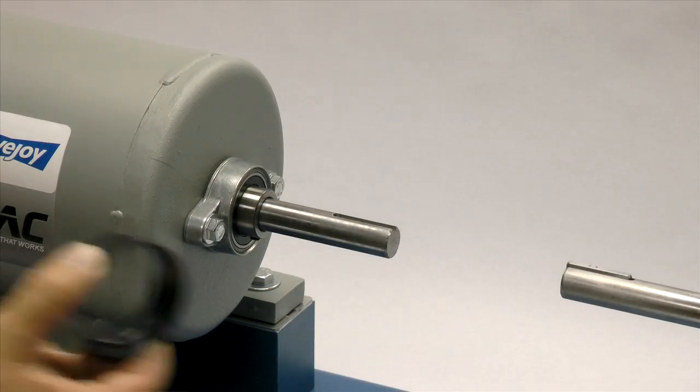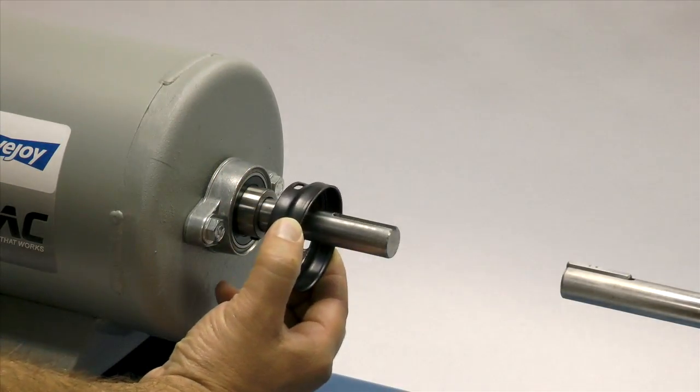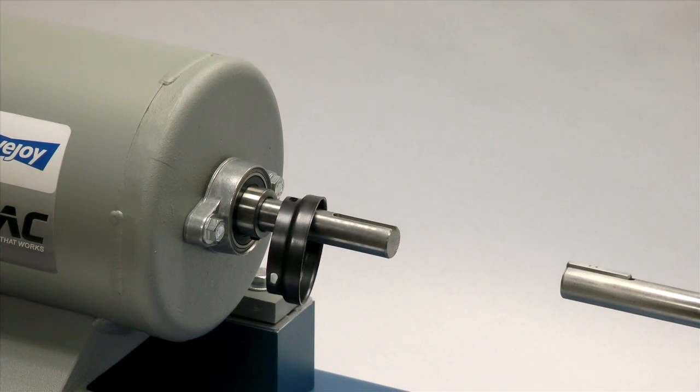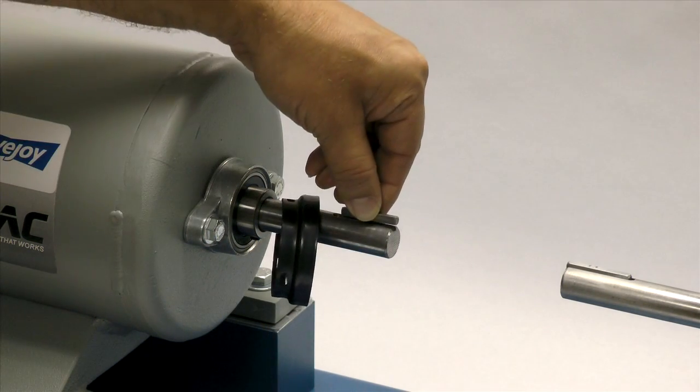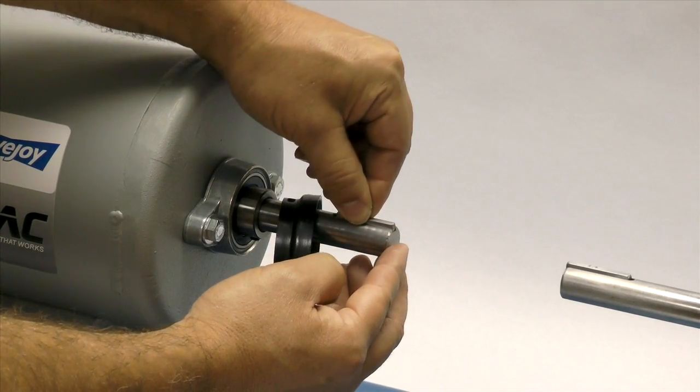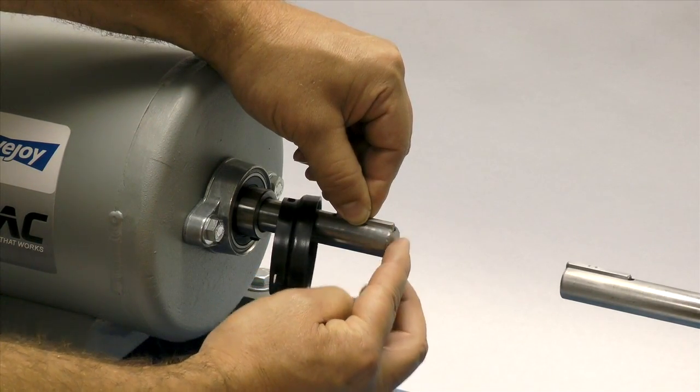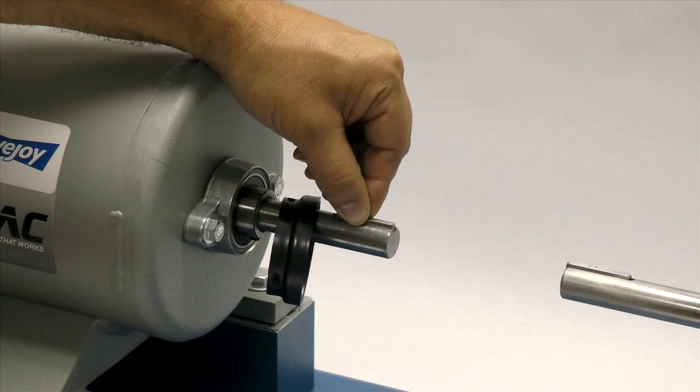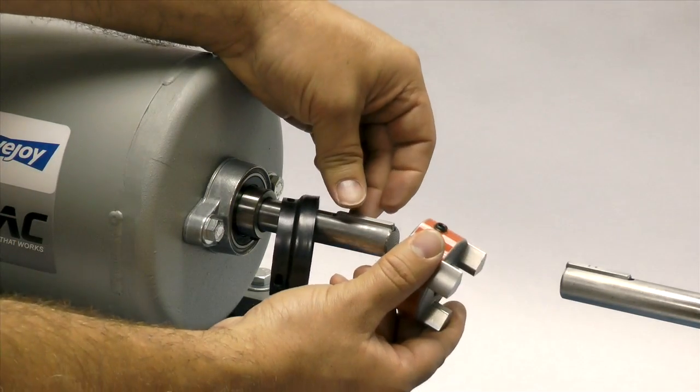Before installing the hub, slide the collar onto the shaft on the side where the LC style hub with the tapped holes will be mounted. Then place the key in the keyway on the shaft. The key should fit snugly into the keyway with no side-to-side movement. The end of the key should line up with the end of the shaft and the hub.